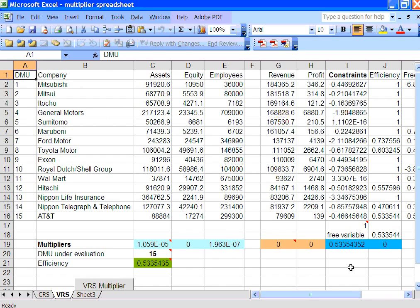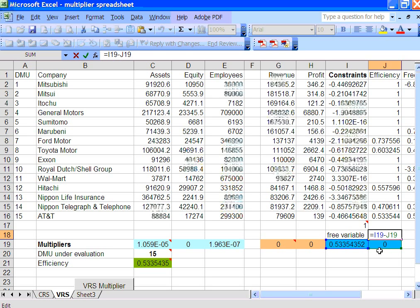Okay, this is the Excel spreadsheet for the input-oriented VRS model that you're looking at. The only thing that I'm going to talk about is this free variable. This is actually the mu. And if you look at the formula,